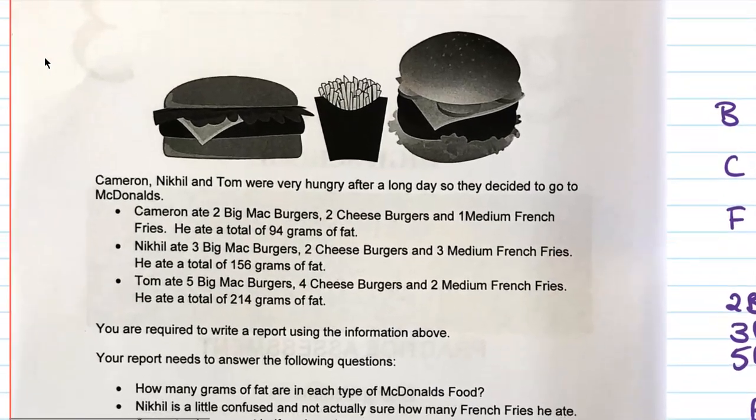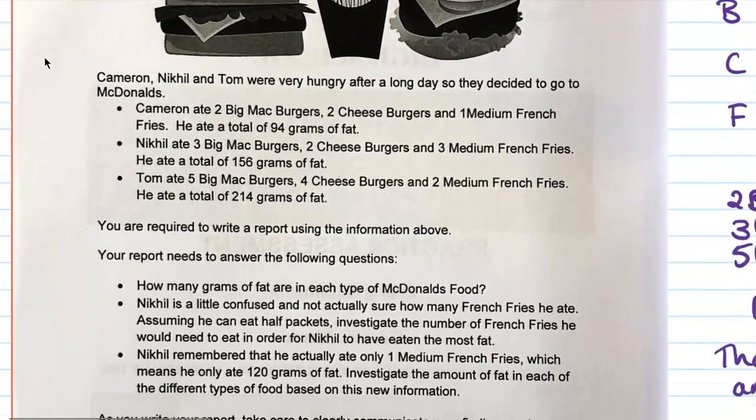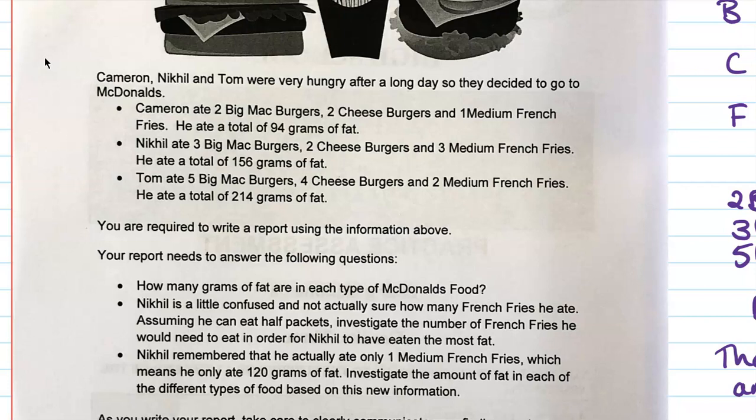So we've got this one about eating McDonald's. Cameron, Nicol and Tom were very hungry after a long day, they go to McDonald's. And then we've got some information about what they ate, how many of each type of thing that they had, and then the total grams of fat that they consumed in that meal.